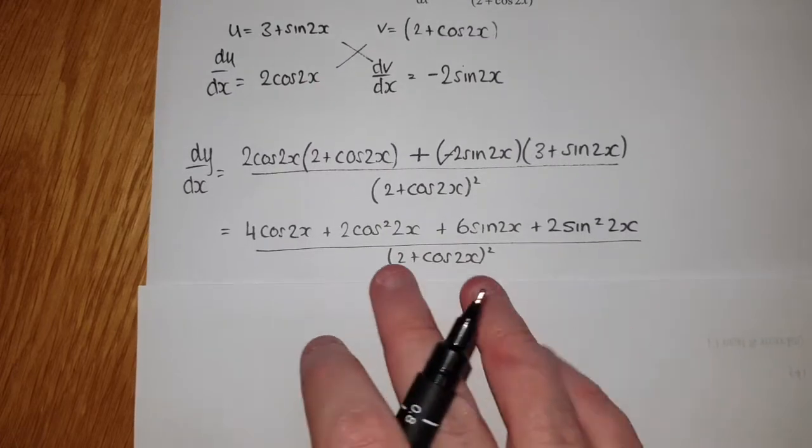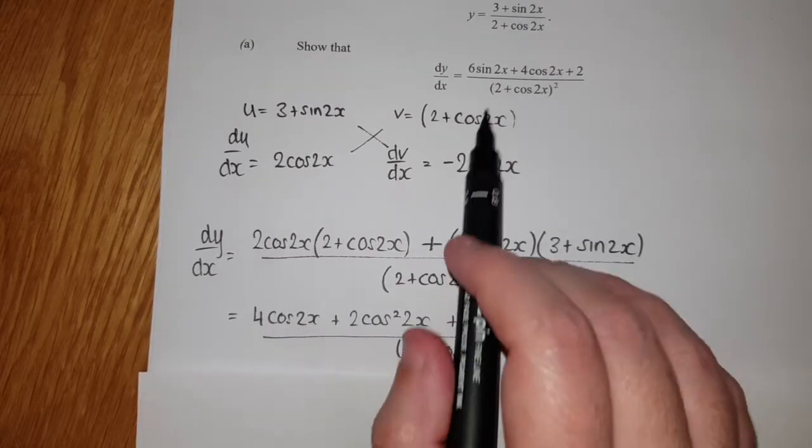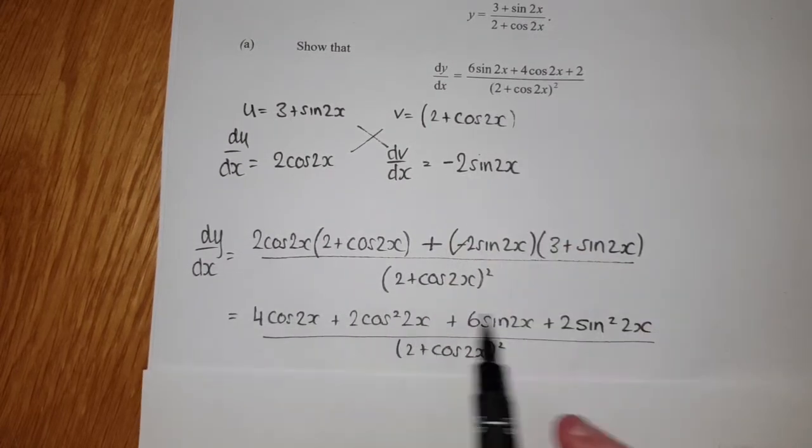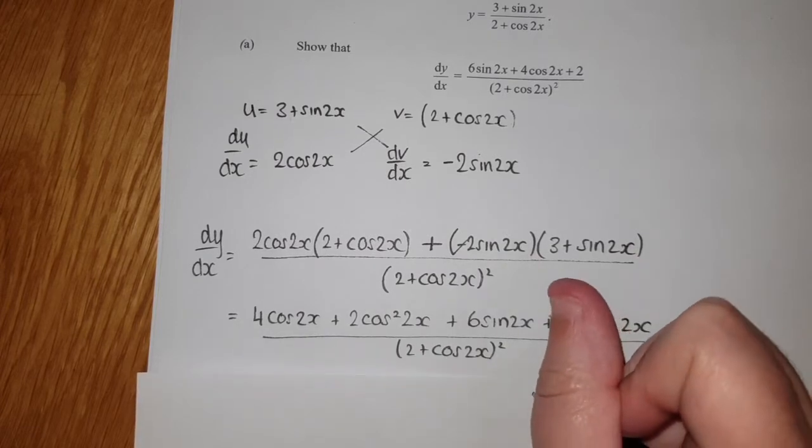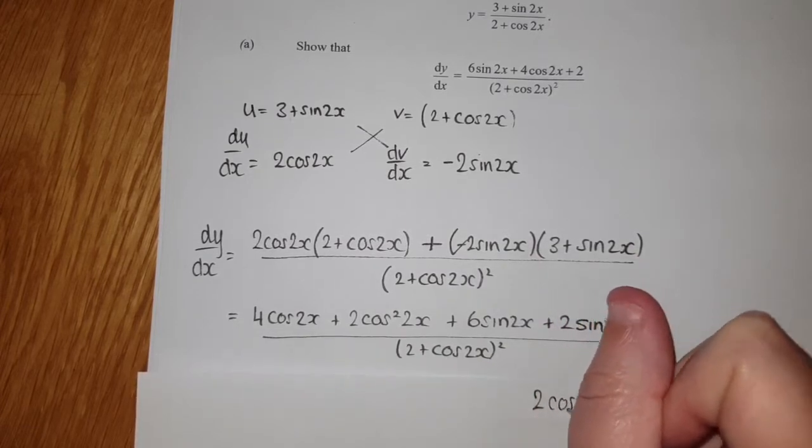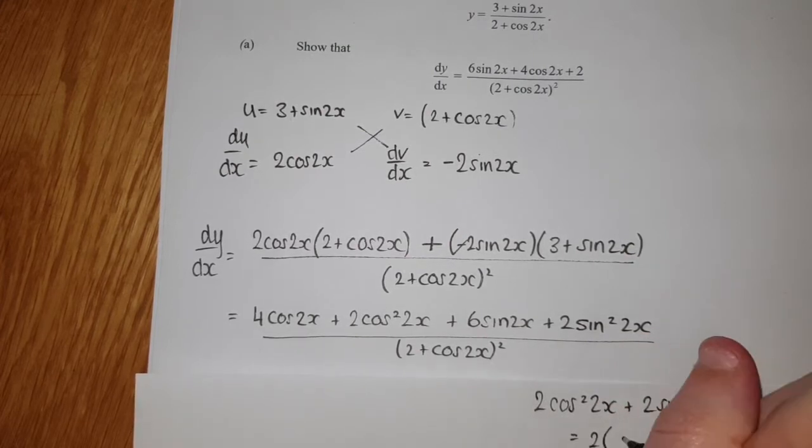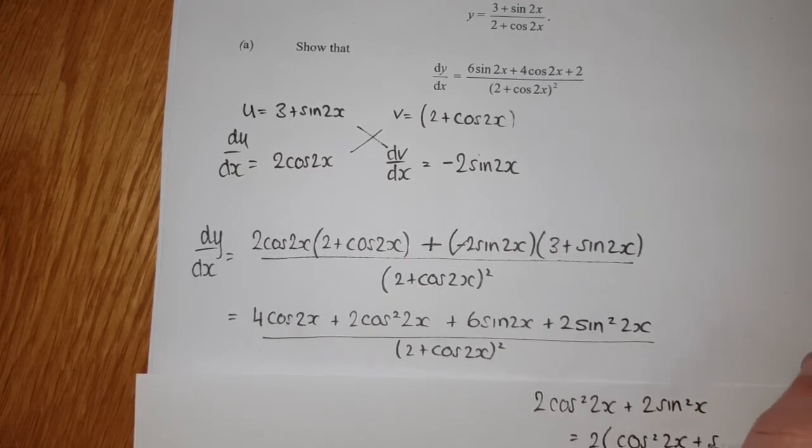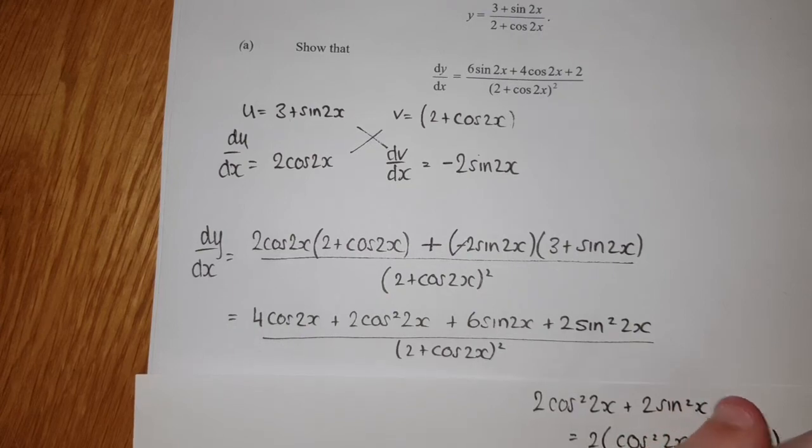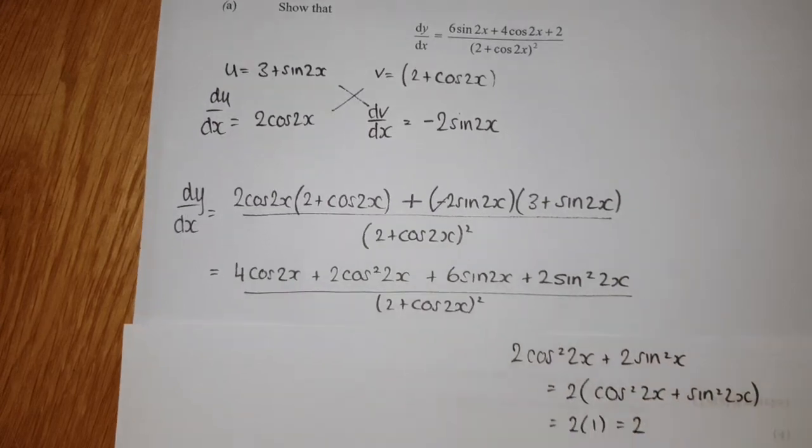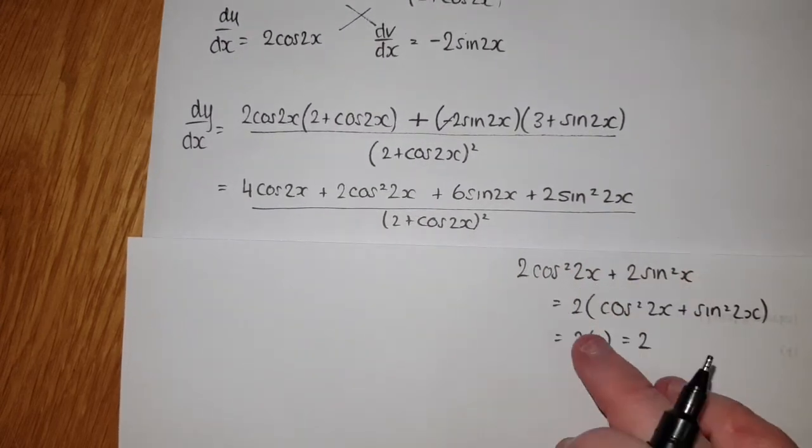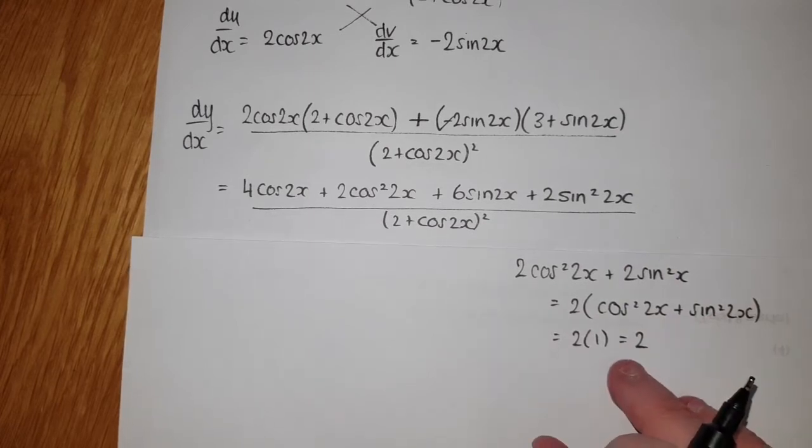You can see we've almost got what we need, but somehow these parts have to disappear. You have to state that 2cos²(2x) + 2sin²(2x), that is the same as 2(cos²(2x) + sin²(2x)), that is 2(1), which gives me 2. Somewhere it has to be nice and clear that cos² + sin² equals 1.